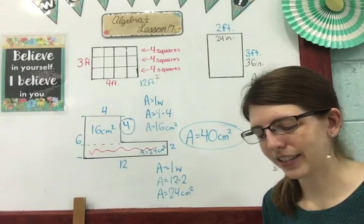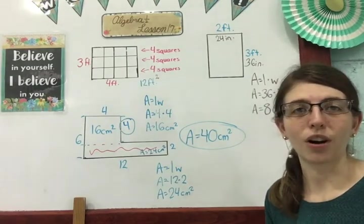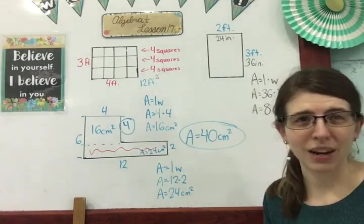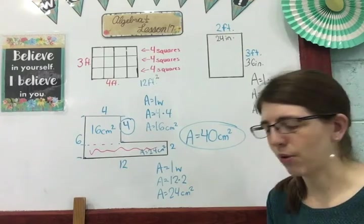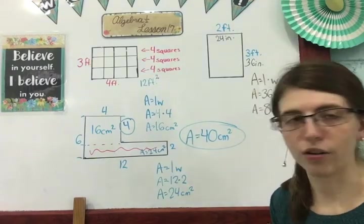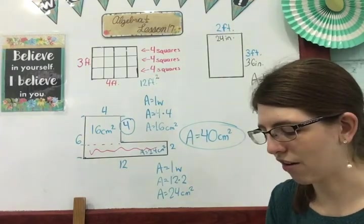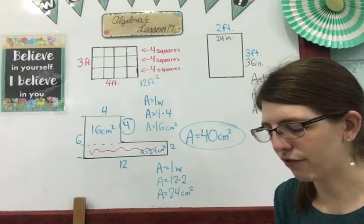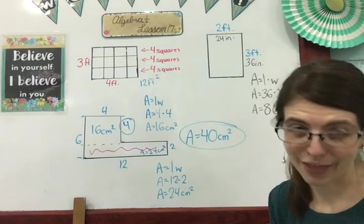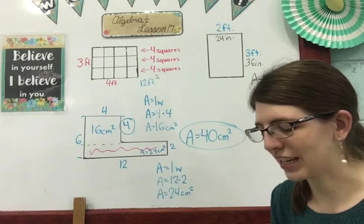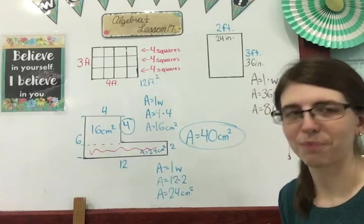And then letter C would be 84 feet squared. Again, there's a bunch of different rectangles you could have drawn for this one and divided that into. But all in all, it should have given you 84 feet squared.